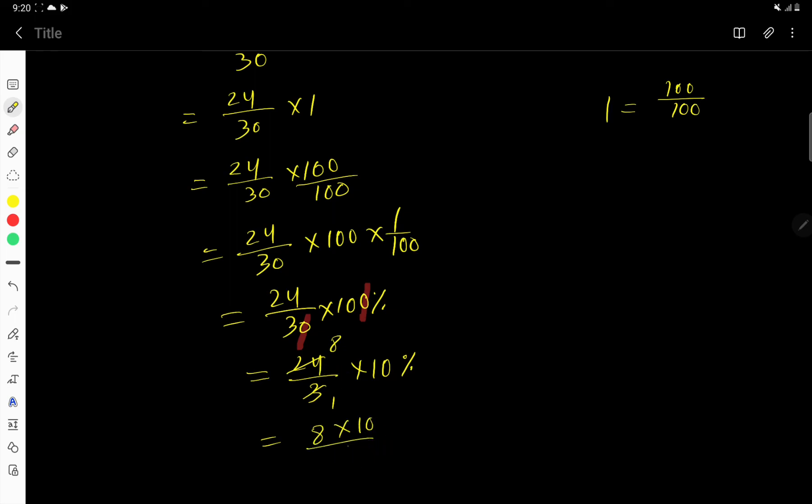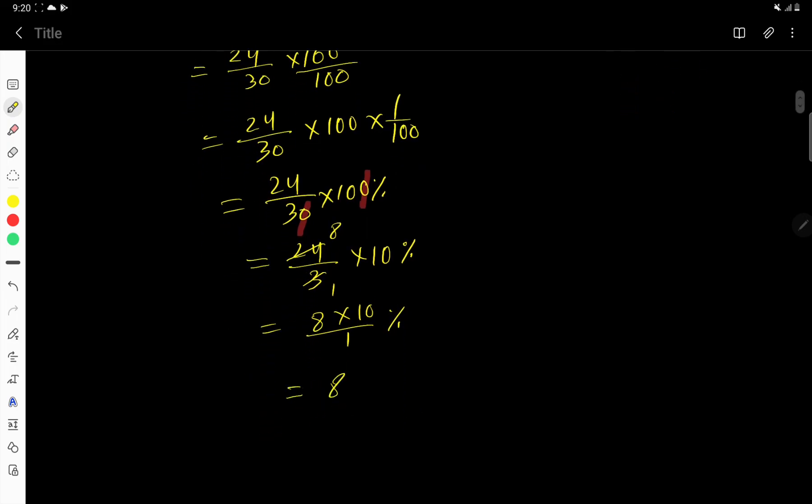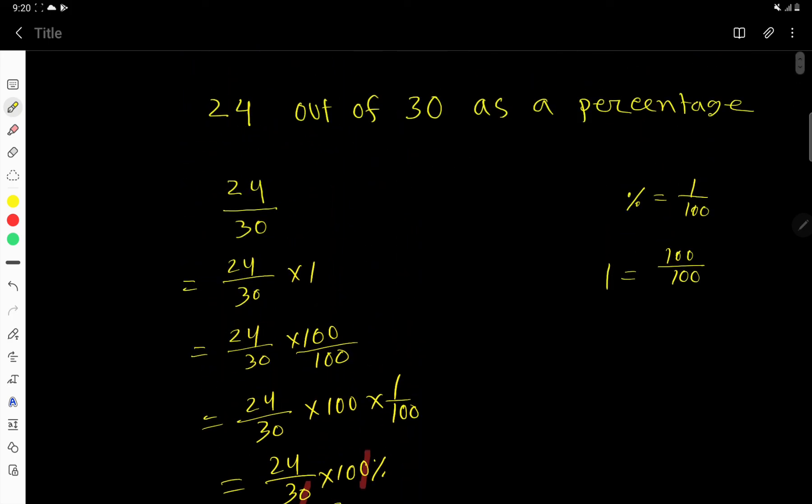10 divided by 1 percentage. So 80 percentage is the answer. So 24 out of 30 is 80 percentage.